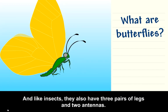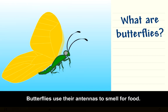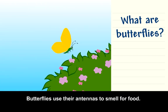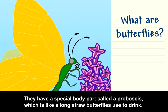Head, thorax, and abdomen. And like insects, they also have three pairs of legs and two antennas. Butterflies use their antennas to smell for food — they drink the nectar of different flowers. They have a special body part called a proboscis, which is like a long straw butterflies use to drink.